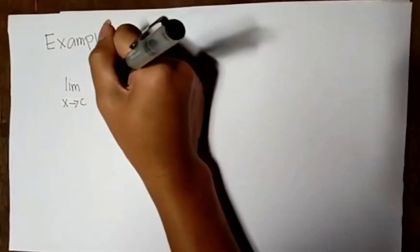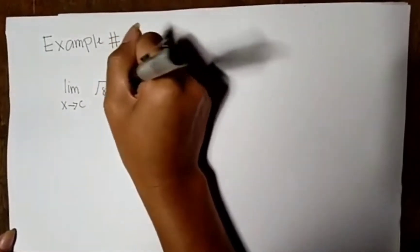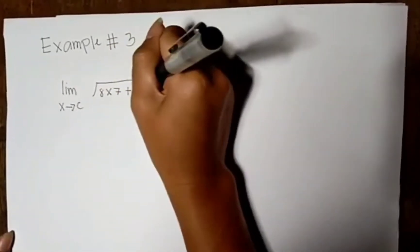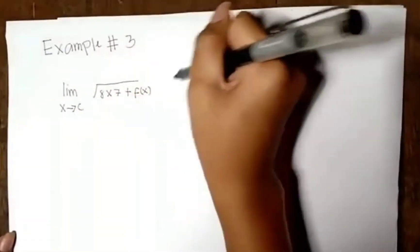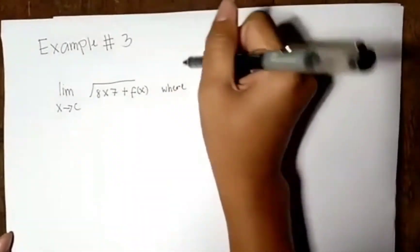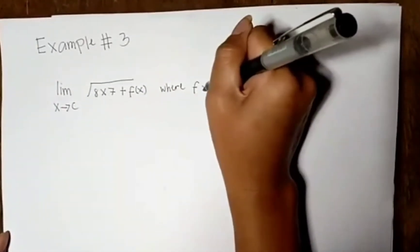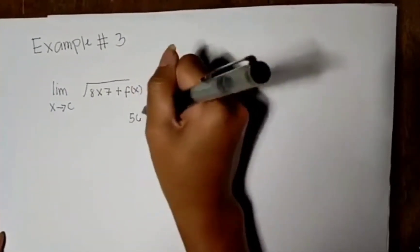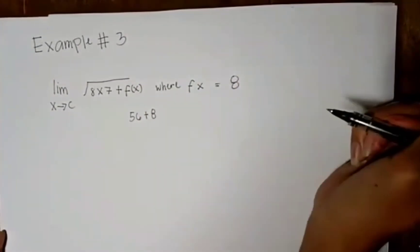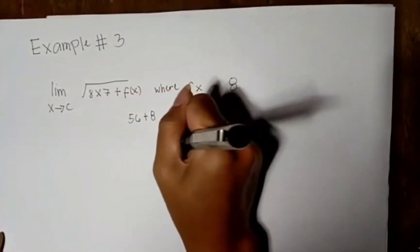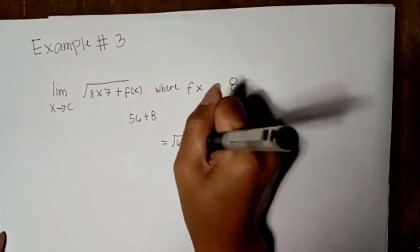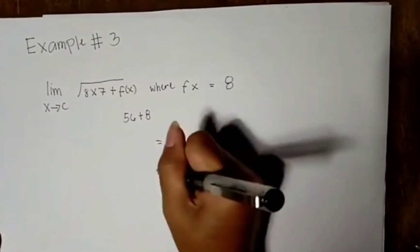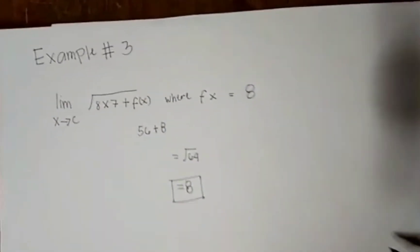Example number 3. Limit of square root of 56 plus f(x) as x approaches c, where f(x) equals 8. 56 plus 8 equals 64. Square root of 64 equals 8.